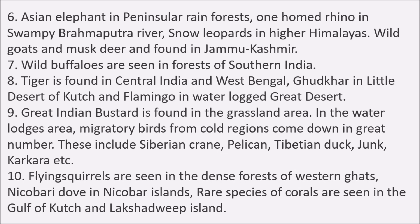Great Indian Bustard is found in the little desert of Kutch and the grassland areas. Flamingo is found in water-logged areas of the great Indian desert. Migratory birds from cold regions come in great numbers, including Siberian crane, pelican, Tibetan duck, and kagra. Flying squirrels are seen in the dense forests of Western Ghats. Nicobari dove is found in Nicobar Island, and rare species of corals are seen in the Gulf of Kutch and Lakshadweep islands.